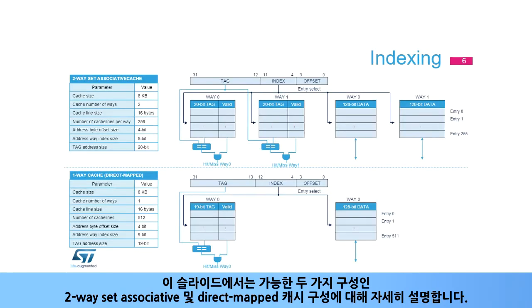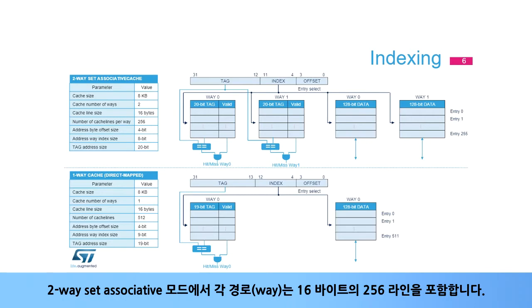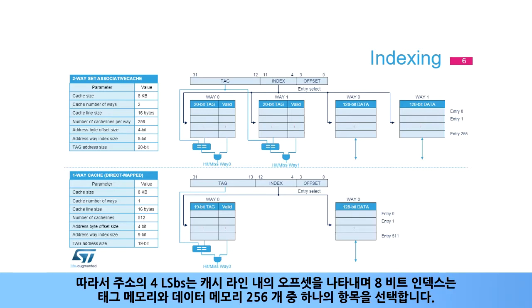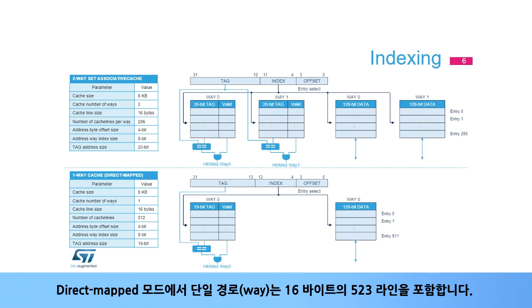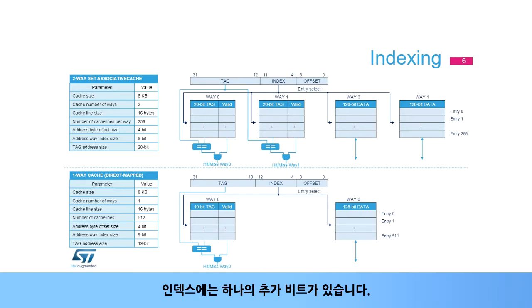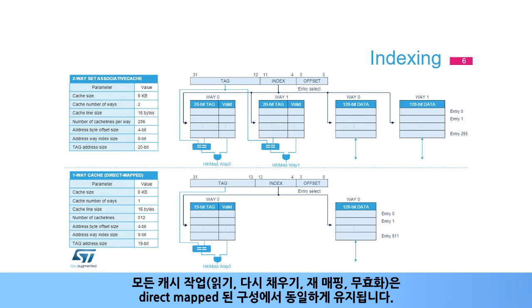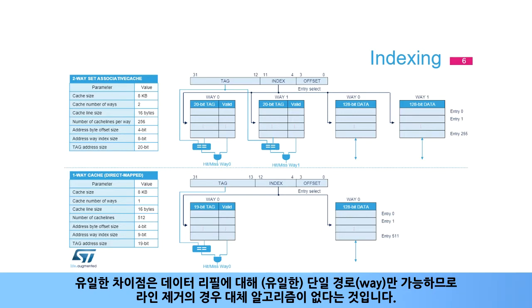This slide details the cache organization in the two possible configurations: two-way set-associative and direct mapped. In two-way set-associative mode, each way contains 256 lines of 16 bytes. The 4 LSBs of the address represent an offset within a cache line, and the 8-bit index selects one entry among 256 in the tag memories and in the data memories. In direct mapped mode, the unique way contains 512 lines of 16 bytes, and the index therefore has one additional bit. All cache operations such as read, refill, remapping, and invalidation remain the same in direct mapped configuration. The only difference is the absence of a replacement algorithm in the case of a line eviction, since only one way is possible for any data refill.